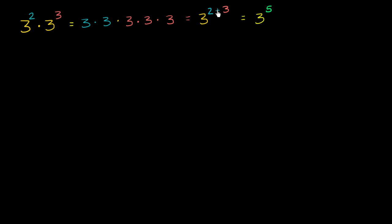So that's kind of interesting. But now let's use this property to try to think about what a negative exponent should be. We're going to try to think about what three to the negative two power should be equal to. I encourage you to pause this video and think about what it should equal if we want this property to hold — that if you have the same base raised to different exponents and you're taking the product, you can take that base to the sum of those two exponents.